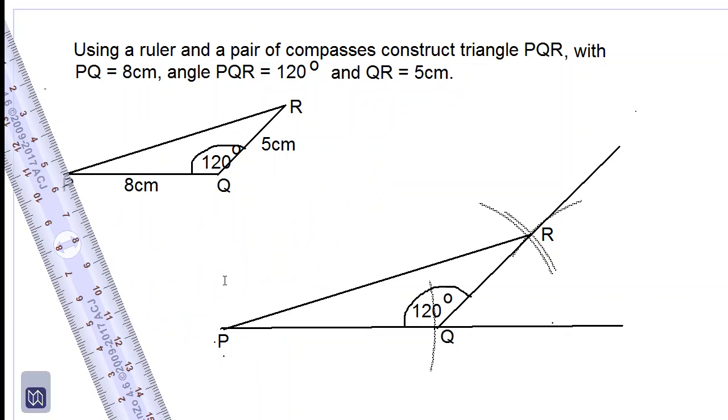And there we have it, triangle PQR. Let's label 8cm and 5cm. Now we are finished. Thanks for watching, do have a wonderful day.